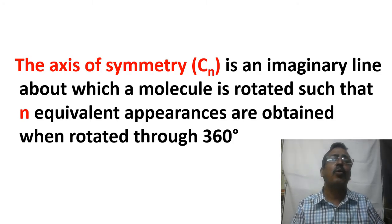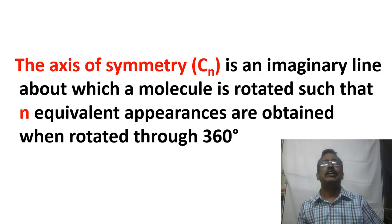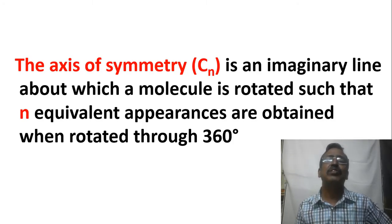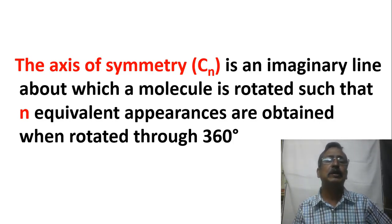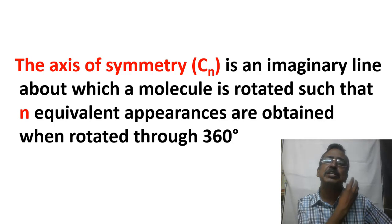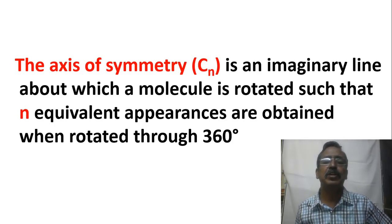In summary, the axis of symmetry is an imaginary line about which a molecule is rotated such that equivalent appearances are obtained when rotated through 360 degrees.